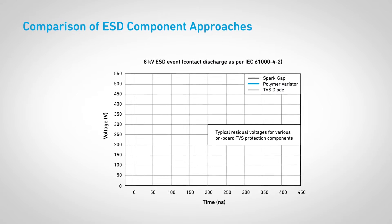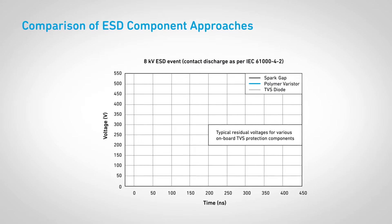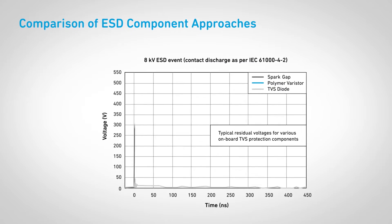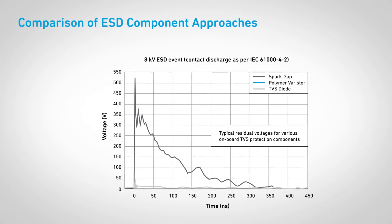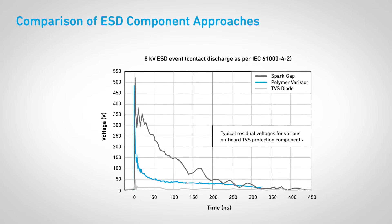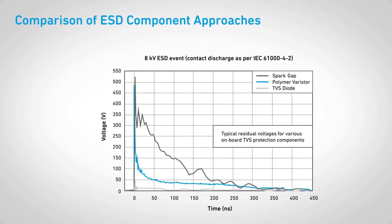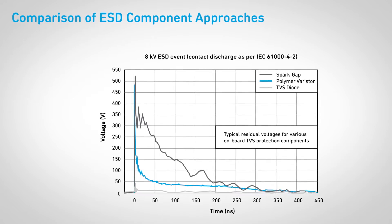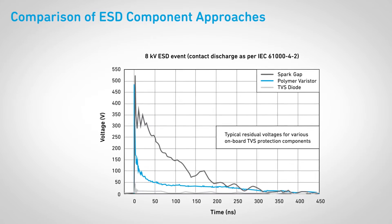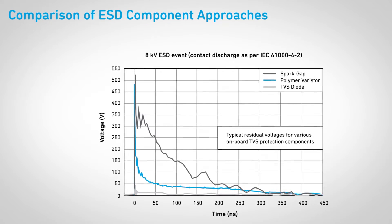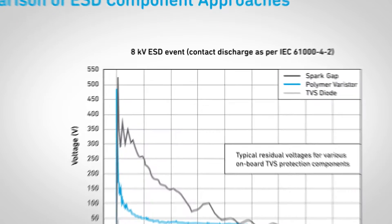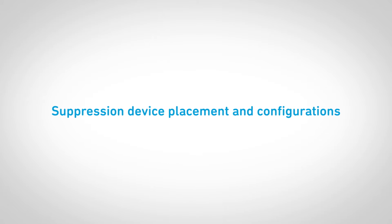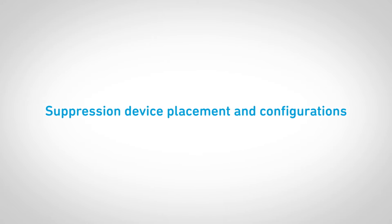Suppression devices give different results. As shown, TVS diodes reduce the voltage better than spark gap or polymer varistor devices. But note, each application is different. To protect the IC device in your application, a polymer may be enough. Let's review in more detail suppression device placement and configurations.